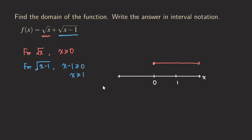For the second domain, x is greater than or equal to 1, so we include the one with a solid dot. We then take everything on the right side of one because it's greater than one — so we shade anything greater than or equal to one.